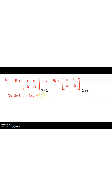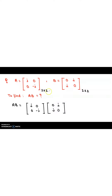Now we have to find the product of A and B. There is one rule: if you have an M×N matrix and an N×P matrix being multiplied, the inner dimensions N must be the same, and the resultant matrix will have the order M×P. Using this rule, here M is two and P is two, so the resultant will also be two-by-two.